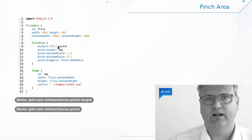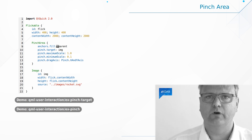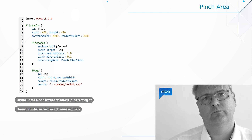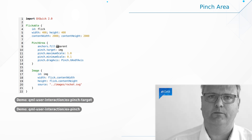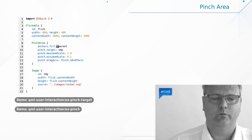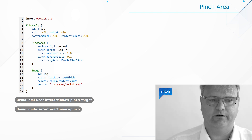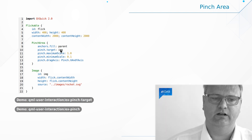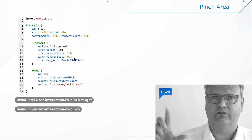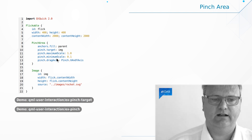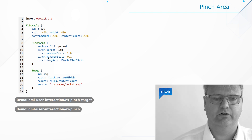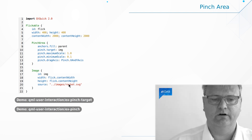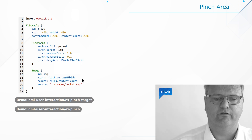The PinchArea is an element, so we need to anchor it — otherwise its size defaults to zero by zero, which is not useful. So: anchors.fill: parent. Then I need to specify who I'm actually pinching, so I set pinch.target to the image. The minimum and maximum scale prevent pinching outside a given size. And drag axis controls how I want to resize — whether I can resize it, or even rotate it, which is another feature of PinchArea. My image down here has width and height set to the size of the Flickable element.